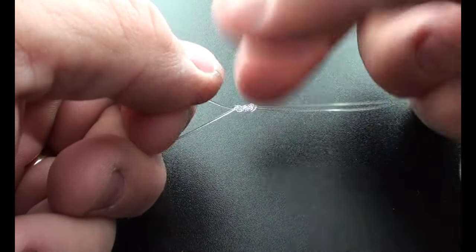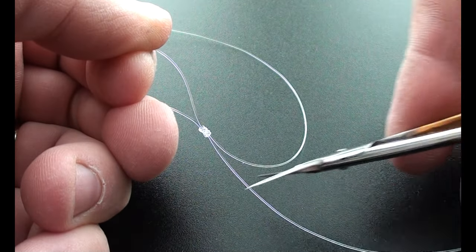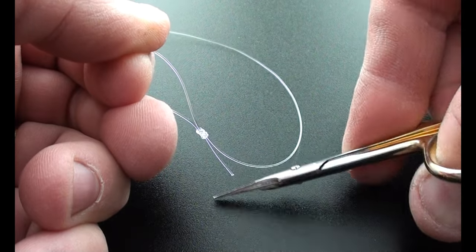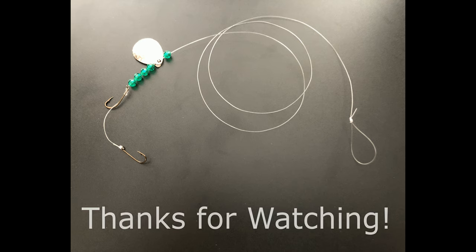Always wet your line before you cinch it down. Once you get it down nice and tight, it's simply a matter of clipping your tag end and you've got a finished crawler harness. And these can be made up in about two minutes.